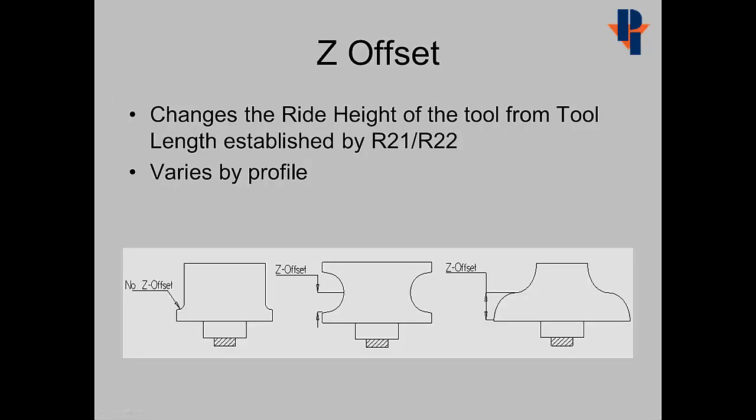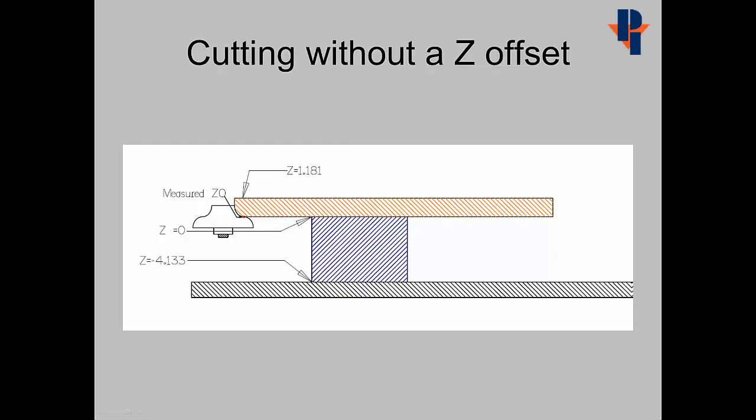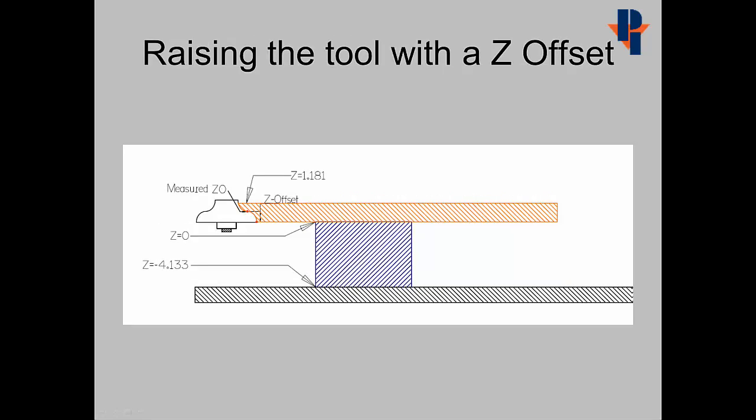A value in the Z offset will change the ride height of the tool from the tool length established by R21 or R22. The need for a Z offset varies by the profile. Cutting without a Z offset, the measured Z zero on the tool will ride at the Z zero or bottom of the stone. Adding a positive value in the Z offset register will raise the tool by that amount.